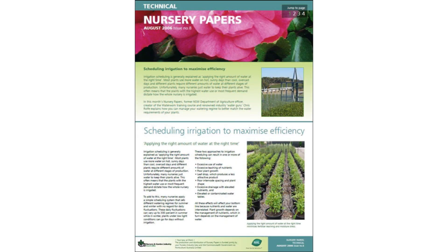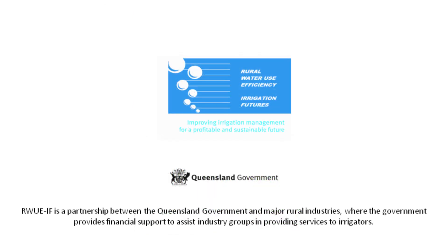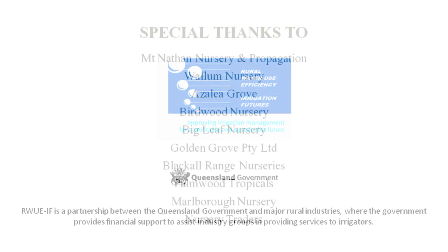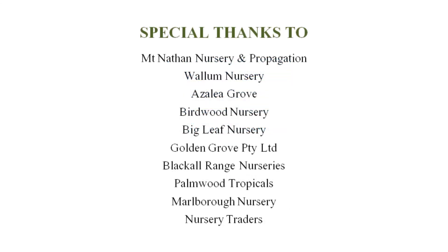Further information on irrigation scheduling can be found in the publication Managing Water in Plant Nurseries, or for more detail refer to the nursery paper Scheduling Irrigation to Maximise Efficiency, August 2006. This video has been supported by the Queensland Government Department of Natural Resources and Mines under the Rural Water Use Efficiency Irrigation Futures Initiative. Special thanks go to the following businesses for their assistance in producing this video.